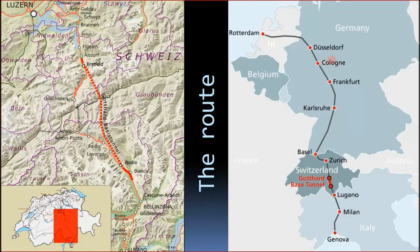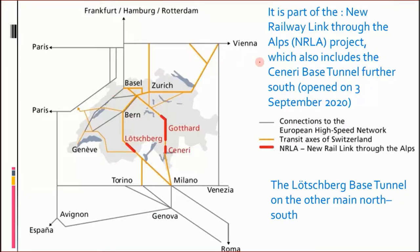Let me show you the route. You can see the map of Europe — Genoa and Rotterdam. If you have to go from Genoa or west Switzerland to Rotterdam, you need this tunnel to cross the Alps. This was not just a single project; it was part of a bigger project. There are other tunnels as well, such as the Lotschberg Tunnel and the Ceneri Tunnel.